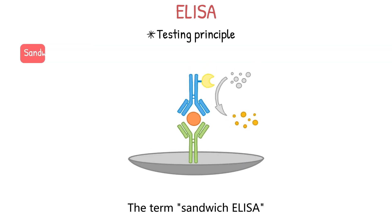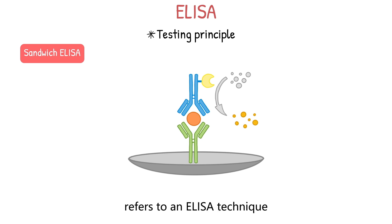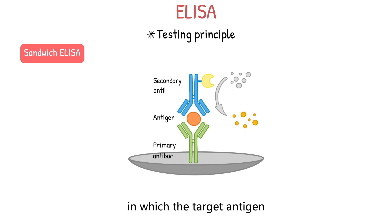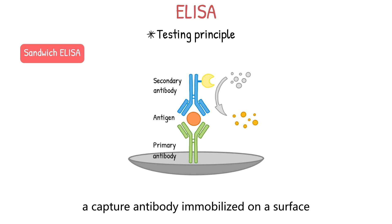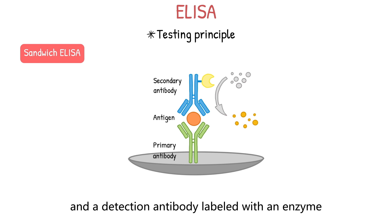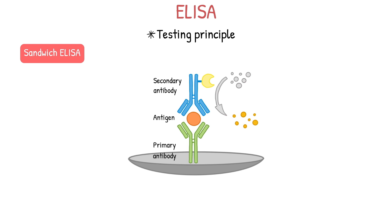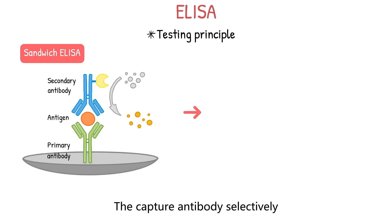Sandwich ELISA refers to an ELISA technique in which the target antigen is sandwiched between two antibodies: a capture antibody immobilized on the surface and a detection antibody labeled with an enzyme. The capture antibody selectively binds the antigen from the sample.